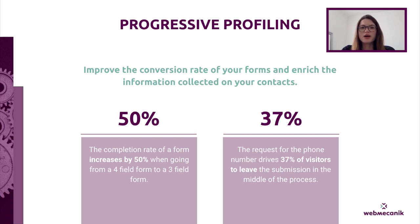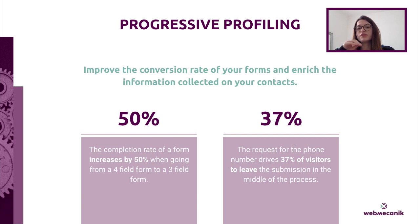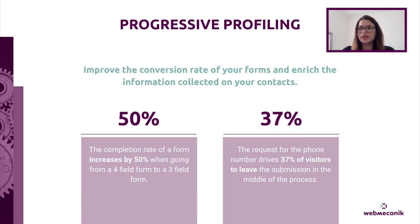We were talking about forms on landing pages to collect information about visitors. Progressive profiling is a feature that allows you to improve the conversion rate of your forms and enrich the information collected on your contacts. A key insight: the completion rate of a form increases by 50% when switching from a 4-field form to a 3-field form. And asking for a phone number causes 37% of visitors to abandon the submission.